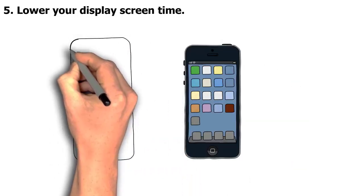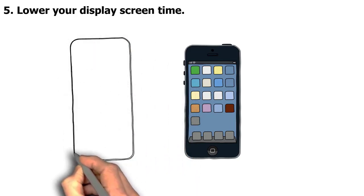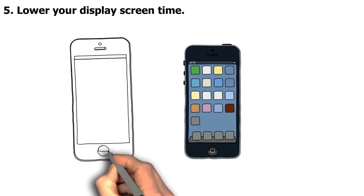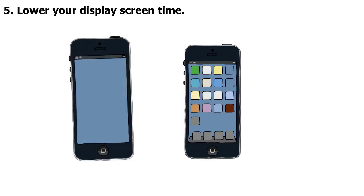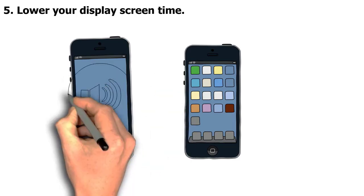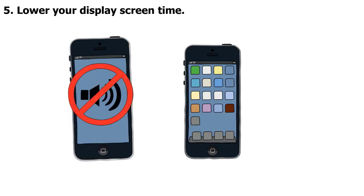Try using an app to set screen time limits and send mindfulness reminders throughout the day. You can also delete unnecessary apps from your cell phone, or create a daily habit of not using your phone until after breakfast, for example.